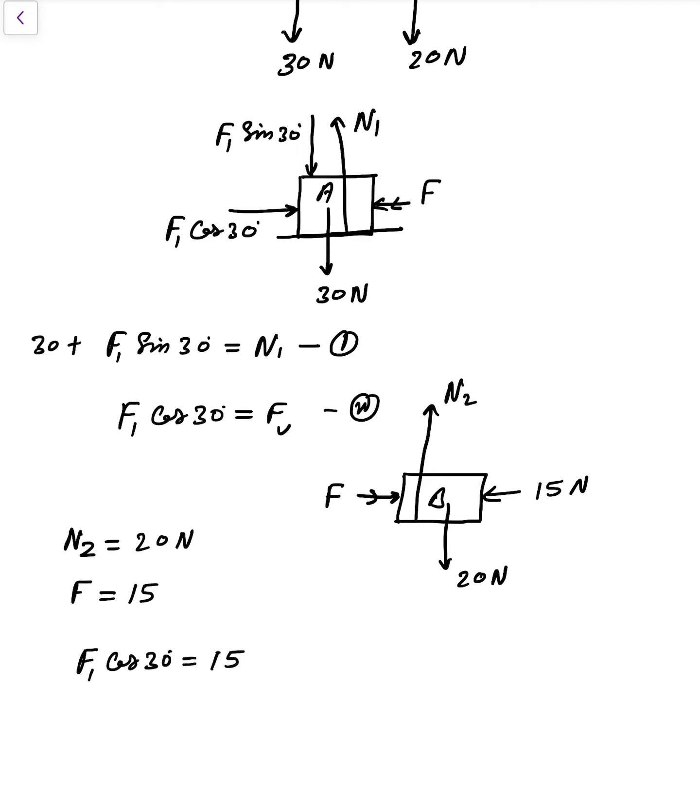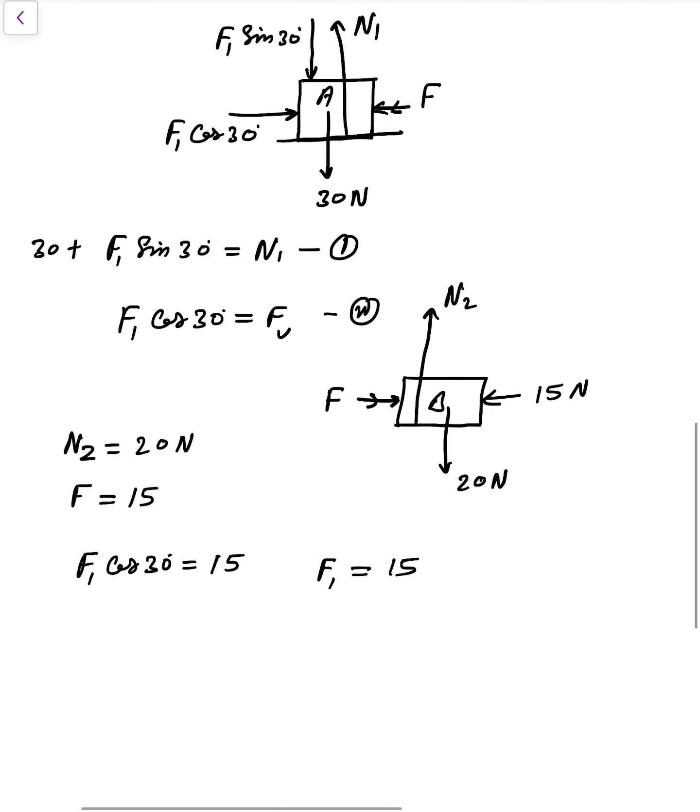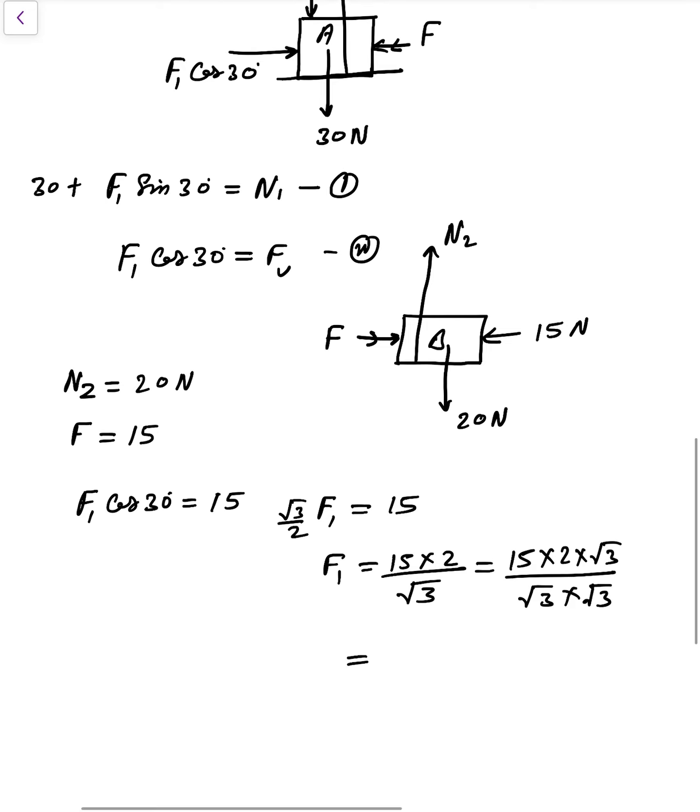So F1 is 15 divided by cos 30. What is cos 30? Cos 30 is root 3 by 2. So F1 is written as 15 times 2 divided by root 3, or you can say 15 times 2 times root 3 divided by root 3 times root 3. So that value is 10 root 3.